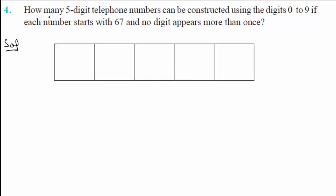Now, for a different problem: how many 5-digit numbers using digits 0 to 9? Here, digits 6 and 7 are fixed — this position is locked and this position is locked. So you don't have options for those positions; 6 and 7 are fixed.